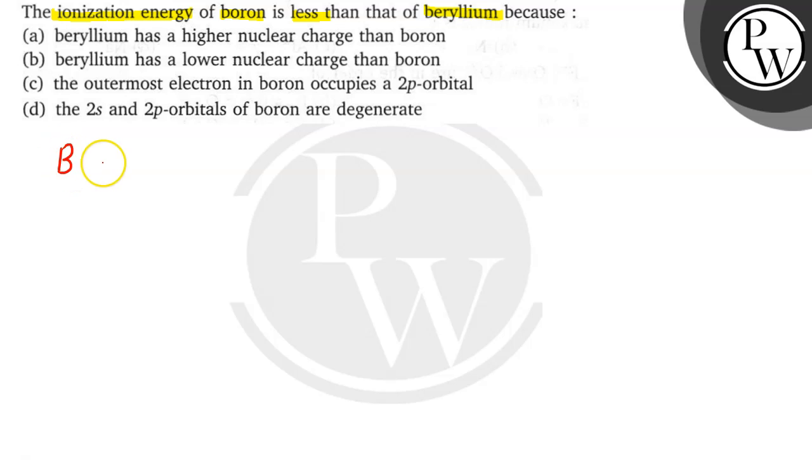boron, that is atomic number 5, then it is 1s², 2s² and 2p¹. And for beryllium,